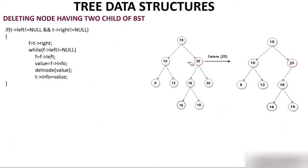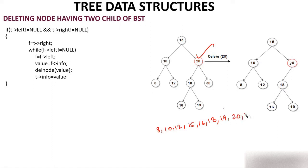Third condition: deleting a node having two children — suppose you want to delete 20. The biggest question is who will take care of 18 and 30. The place of the deleted node is taken by its in-order successor. The in-order of BST (increasing order): 8, 10, 12, 15, 16, 18, 19, 20, 30. The in-order successor of 20 is 30, and since 30 is a node having zero children, we already know how to delete it.